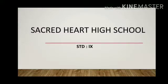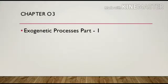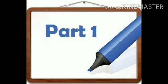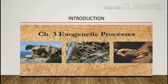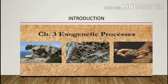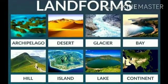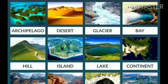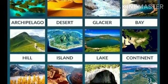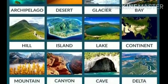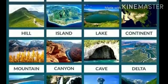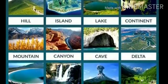Welcome back. Today we begin with Class 9 Geography Chapter 3: Exogenetic Processes, Part 1. In this lesson we are going to study about the external processes which take place on the surface of the earth. In the previous lesson we already studied the endogenetic process — the internal process. Many landforms are formed due to internal movements, and many processes occurring on the earth's surface also lead to the formation or degradation of landforms continuously.